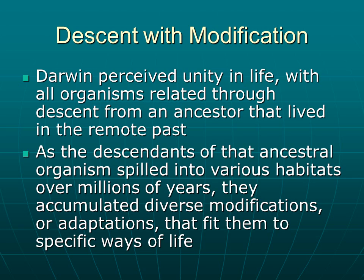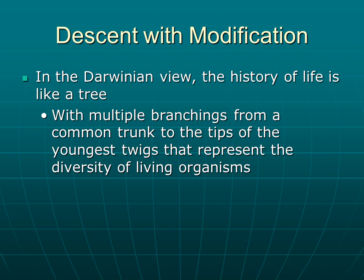Darwin perceived that the unity we see in life comes from ancestors that lived in the past — we're related to our ancestors and we're able to evolve because of them. As descendants of ancestral organisms moved into new habitats over millions of years, they accumulated different adaptations that allowed them to thrive in their unique environments. In the Darwinian view, you can look at the history of life like a tree, with multiple branches from a common trunk to the tips of the youngest twigs representing the diversity of living organisms.